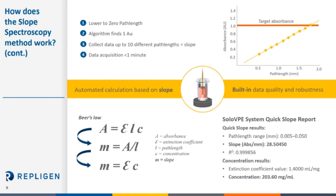The software collects data by lowering the fibrite into the vessel, setting a zero path length, and scanning from small to large path lengths until it finds about one absorbance unit. It then collects 10 different path lengths to build the slope regression. The software is completely automated — it doesn't need to be programmed with path length range or step. Path length choices range from 5 microns up to 15 millimeters in as small as a 5-micron step, giving the device 3,000 choices of path lengths to find your linear regression data, and it takes less than one minute for data acquisition. Concentration is calculated by the modified Beer-Lambert equation where slope equals the extinction coefficient over concentration.